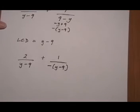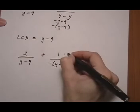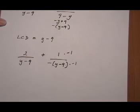So if I want the LCD of Y minus 9, this one needs to multiply by a minus 1, top and bottom. That's going to cancel out and give me the Y minus 9 as the denominator.